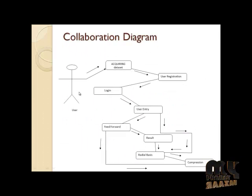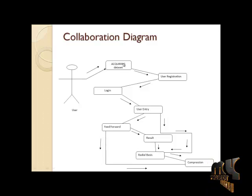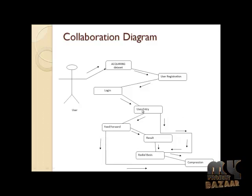This is the collaboration diagram. When the user accesses the dataset, the dataset will be in text format. It can be extracted using the acquiring dataset module, and the user will register their details and then log in. After login, the user entry will be entered. The user registration captures only the basic details of the patient, but in the user entry, full details like age, body mass, blood pressure, and pre-degree will be entered.